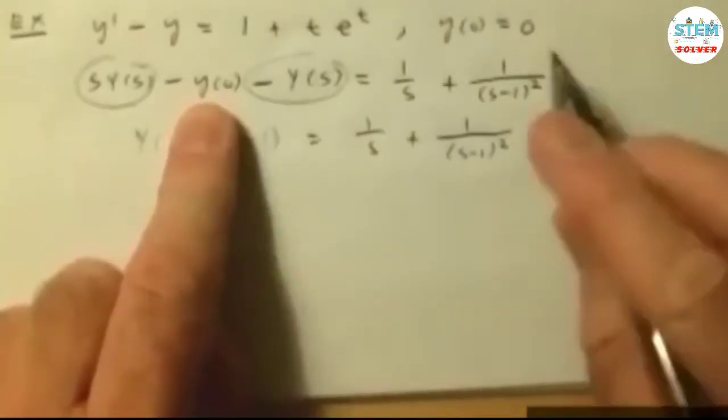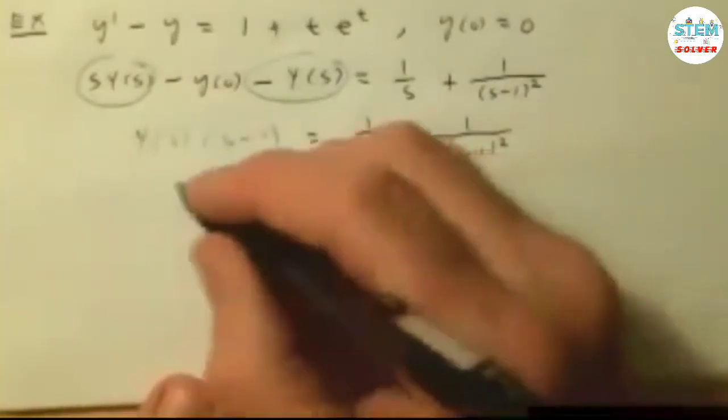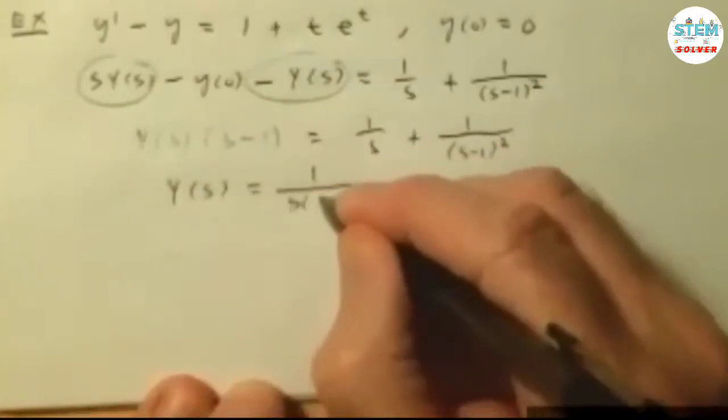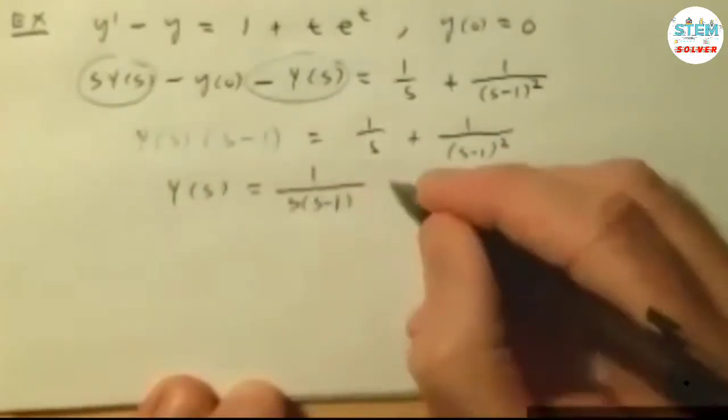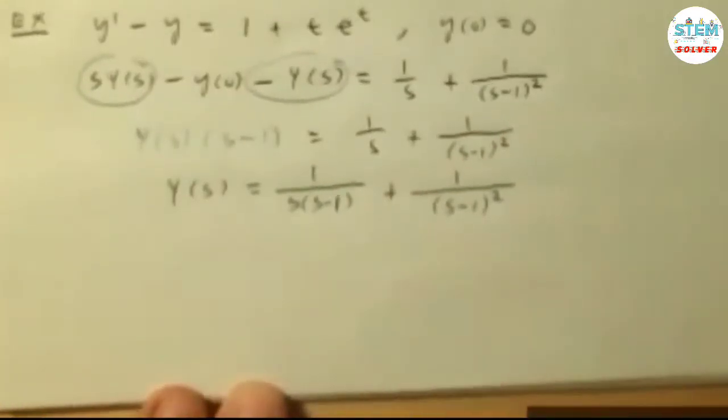Then what I'm going to do is plug in my condition and move it onto this side. It doesn't matter, though, because my condition is 0, so it's going to go away anyway. From there, we're going to solve for Y of s. And what we're going to get is 1 over s times s minus 1 plus 1 over s minus 1 squared.